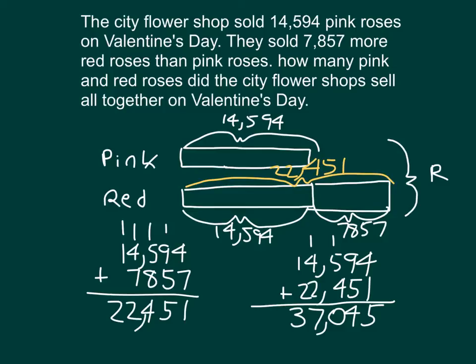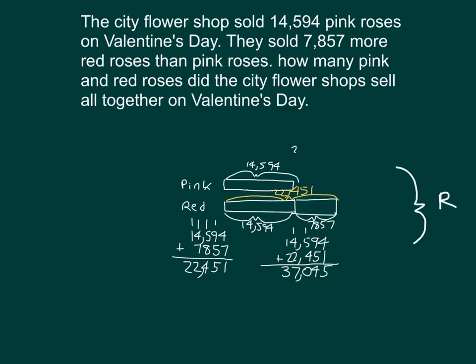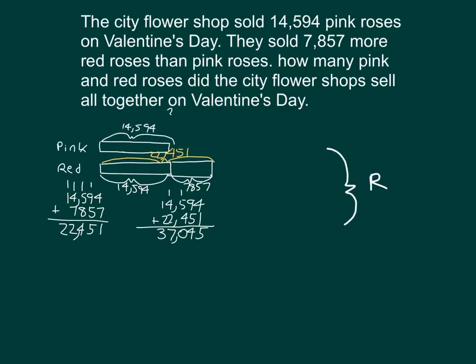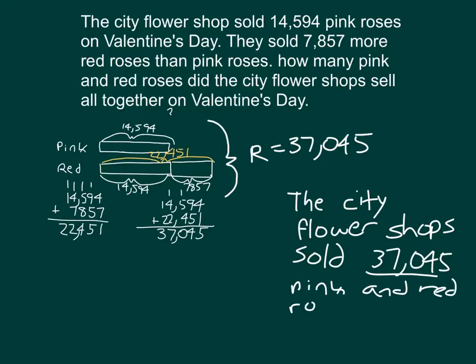And that is the number of roses being sold altogether on Valentine's Day. The city flower shop sold 37,045 pink and red roses — that's our answer for R, the variable we were solving for. They sold that many pink and red roses on Valentine's Day. I expressed my answer clearly there.